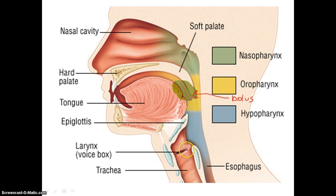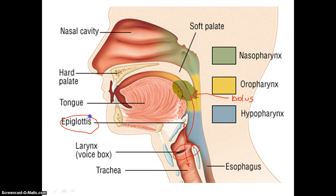Air — only air is supposed to go through this region right here. It would be really bad if a bolus were to go down into this region right here. So what does our body do? We have muscles that will move up our larynx right here and push it against this organ right here called our epiglottis.